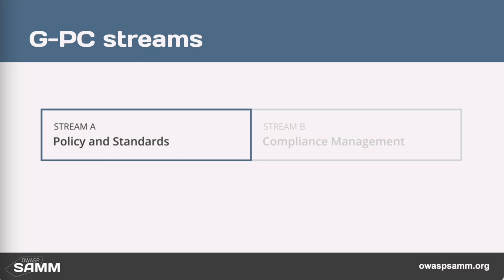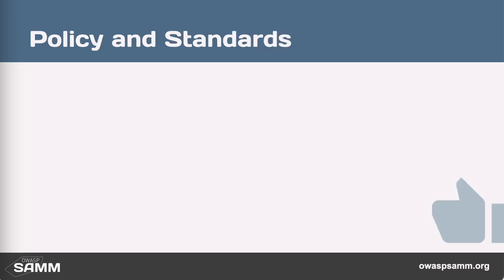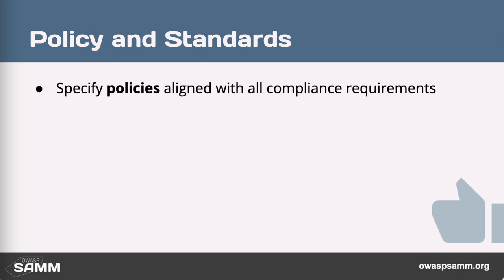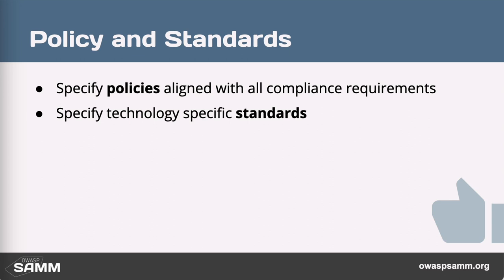Let's have a look at the first stream: policy and standards. What does good look like here? First of all, you are looking for a single consistent set of policies and standards that are aligned with all compliance requirements. At the policy level, you want these things to be technology-agnostic — what do you want to achieve and why. Then you can have any number of standards to talk about how that plays out in a specific technology.